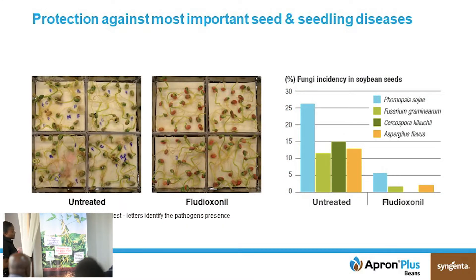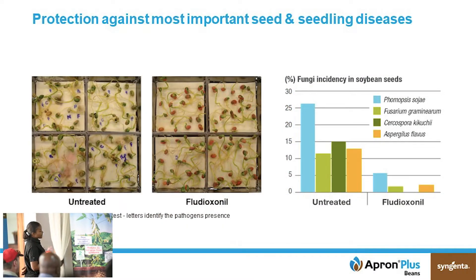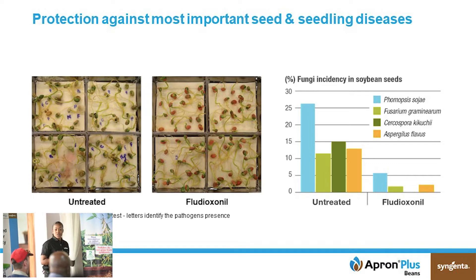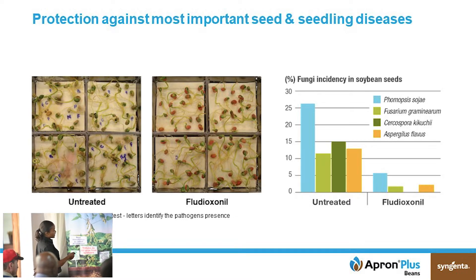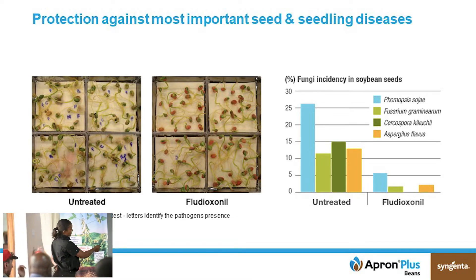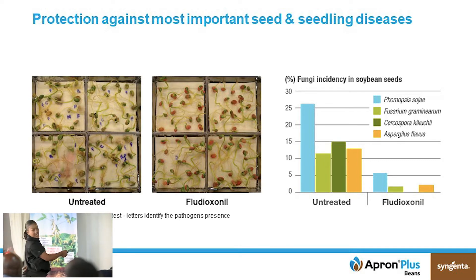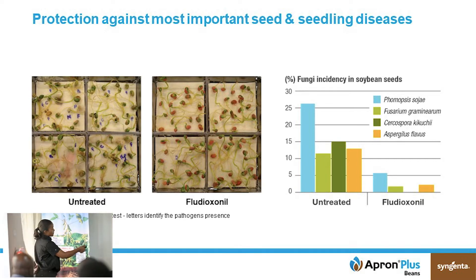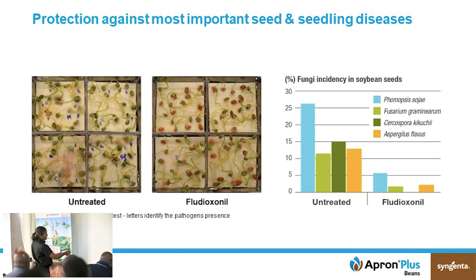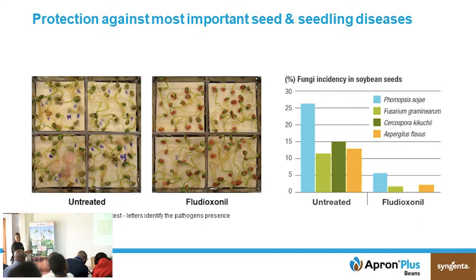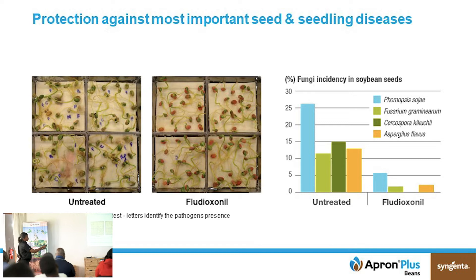This slide shows an experiment done just to show you the range of soybean diseases that it can control. In the untreated, you can see letters showing how many pathogens are present. When you look at the treated plot, there's probably just one letter, meaning that fludioxonil — one of the actives in Apron Plus Beans — is able to control all these pathogens.